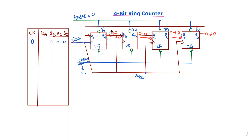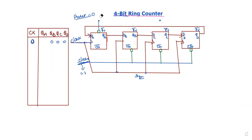The initial setup is to preset the first flip-flop to one. I apply preset only to the first flip-flop and clear to the remaining three flip-flops. Before applying the clock pulse, the initial state is: first flip-flop is 1, and the rest are 0, giving us 1, 0, 0, 0.